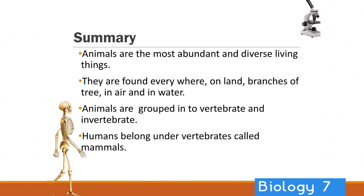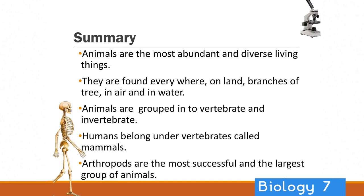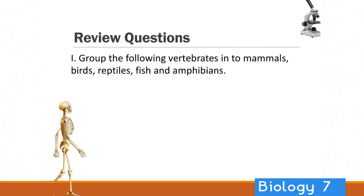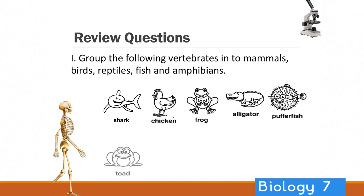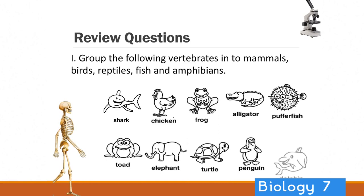Arthropods are some of the most successful and the largest group of animals, which are invertebrates. Now let's do a few review questions. Group the following vertebrates into mammals, birds, reptiles, fish and amphibians: a shark, chicken, frog, alligator, pufferfish, toad, elephant, turtle, penguin and a dolphin.